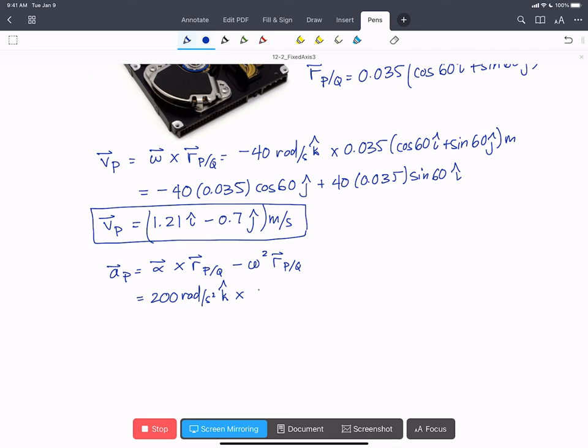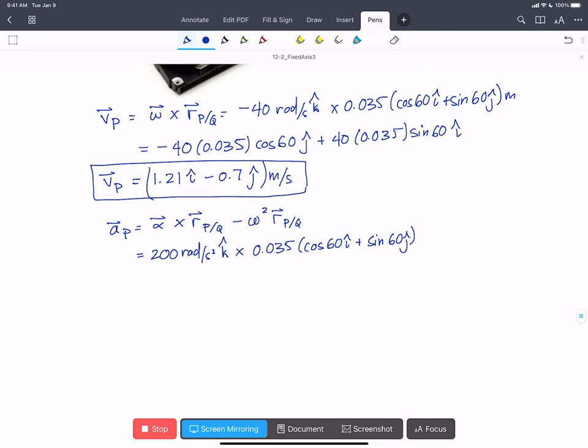And that's going to be crossed with 0.035 cos 60 I hat plus sine 60 J hat. So we're going to do out that first cross product. And then we'll have minus, minus 40 rads per second all squared times 0.035 cos 60 I hat plus sine 60 J hat meters.